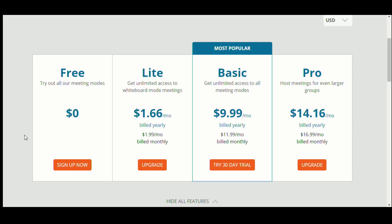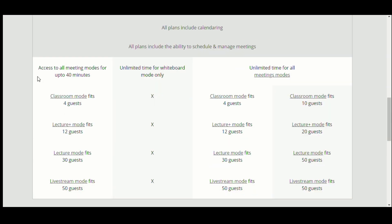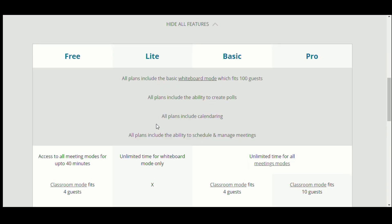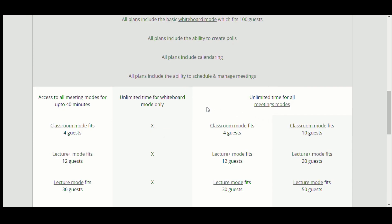So HeyHi is free to use. But there are premium features if you enjoy it that range from $1.66 a month up to $14.16 a month. And just so you can see what you get with the free edition, you get access to 40-minute meetings. So your classes can be up to 40 minutes. The classroom mode that fits 4 guests, lecture plus mode that fits 12 guests, the lecture mode that fits 30, and the live stream that fits 50. And you'll see that with the premium, you do get unlimited time for the whiteboard with the light. And then with the basic and pro, you get unlimited time for all meeting modes.